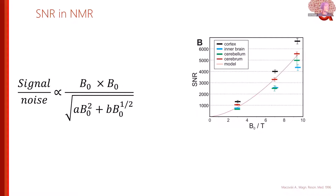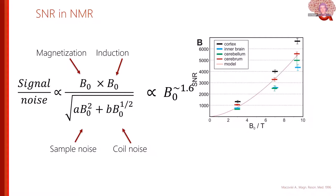We are all excited about high fields, and the promise is that you get a lot more SNR. SNR increases both because you get more magnetization and because the way we detect signal via signal induction also rises. This comes with the promise of a squared increase in SNR, though in practice — accounting for sample noise and coil noise — the actual increase of SNR with magnetic field is around 1.5 to 1.6.